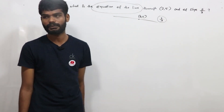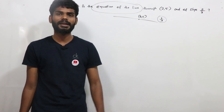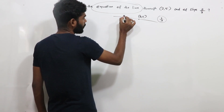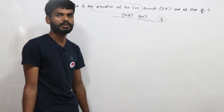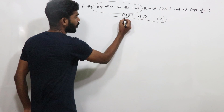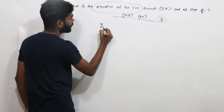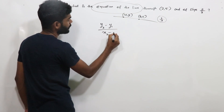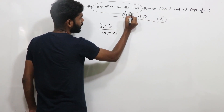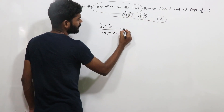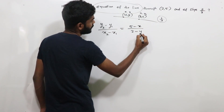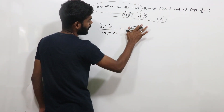We will solve this equation. What is the form of slope? It is y2 minus y1 by x2 minus x1. This is the format. We have a line. We apply the equation using the slope formula y2 minus y1 by x2 minus x1.